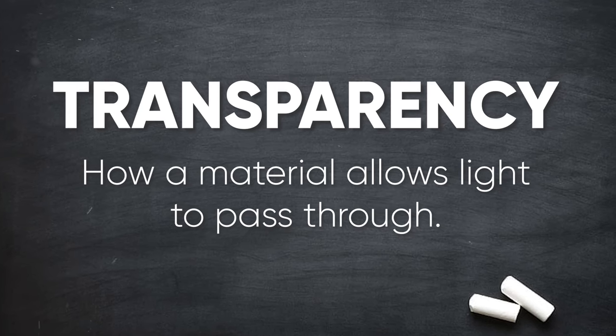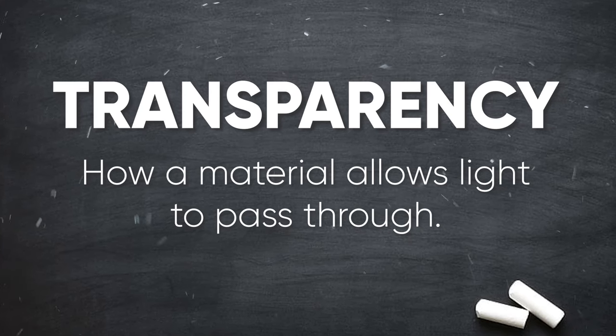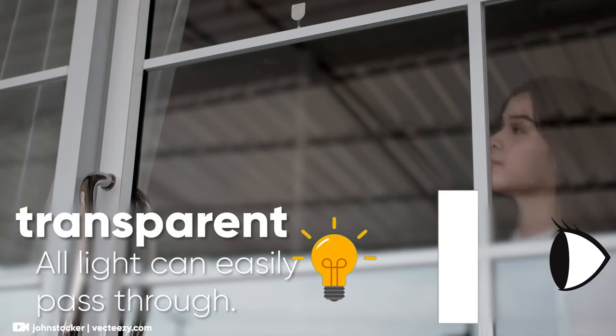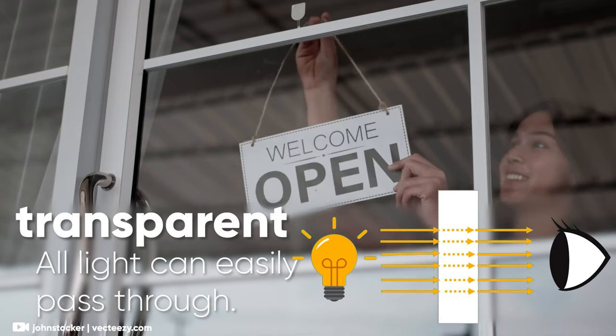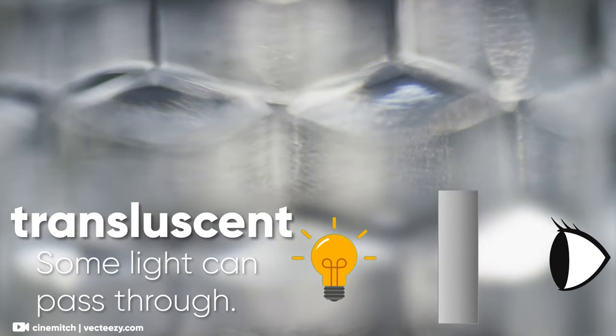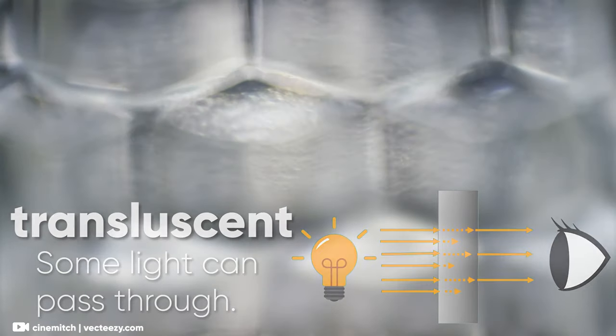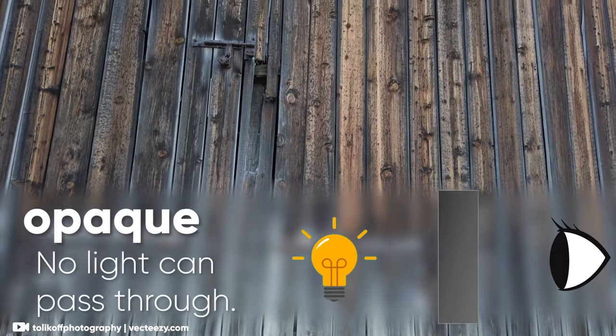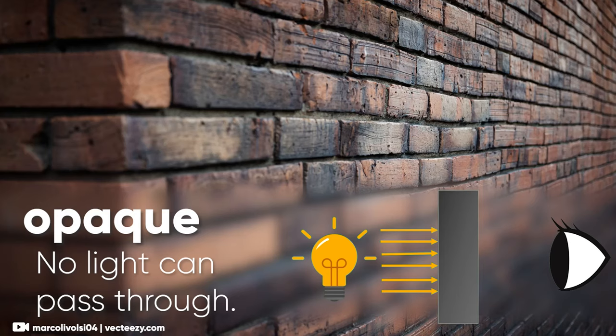Another important physical property is transparency. This refers to how much light can pass through a material. Materials that are fully transparent like clear glass let most light pass through, allowing us to see through them clearly. On the other hand, materials that are less transparent or translucent like frosted glass let some light through but not enough to see clearly. Finally, opaque materials like wood or metal entirely block light, so we could not see anything from behind it.